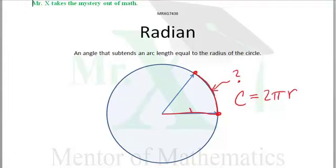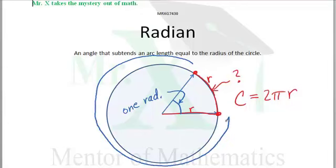This is r. This arc length is r. And this angle in here is 1 radian. Now how many of these angles will it take to sweep out all the way around the circle?